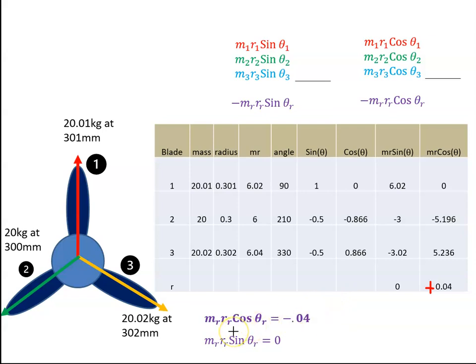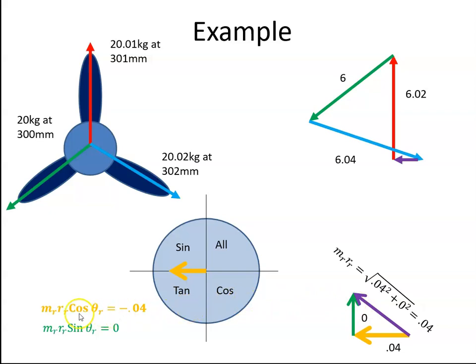If there's no vertical component that means it's all horizontal and it makes our solution easier. Our cosine value is minus 0.04, so it's to the left in that direction. There is no vertical component, that's zero. So MR R is just 0.04 and the angle is 180 degrees. That's what we have shown here. That's that purple vector there. That's our solution for that problem.